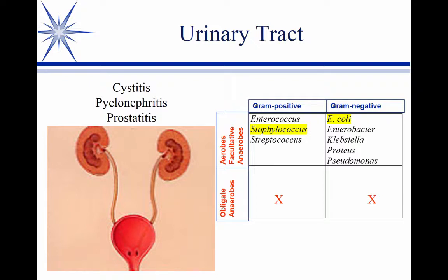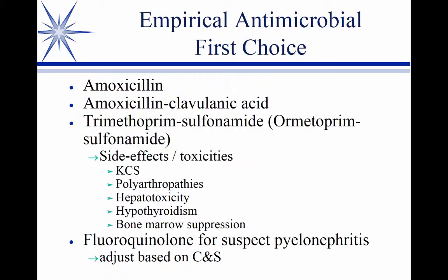Largely, we don't have to worry about obligate anaerobes — we're aimed mostly at E. coli and staph. One thing not written down: whenever you're deciding whether to treat a UTI and your culture comes back positive, there's such a thing as asymptomatic bacteriuria. It is possible for the bladder to be invaded by bacteria that are not disease-causing. They seem to lack the fimbriae to attach to the cell and actually cause disease.